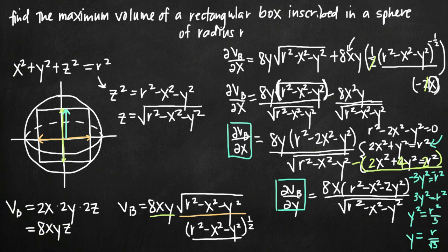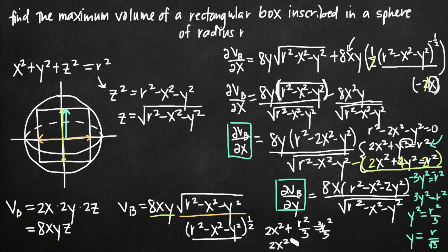To find x, substitute y = r/√3 into the first equation: 2x² + r²/3 = r², so 2x² = 2r²/3, giving x² = r²/3, and x = r/√3. So the critical point is x = r/√3, y = r/√3. Since there is only one critical point, this gives the maximum volume.